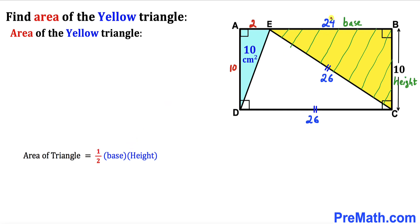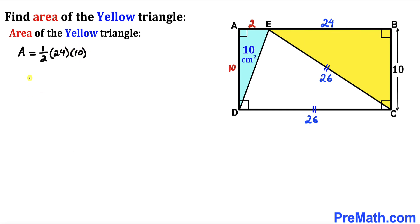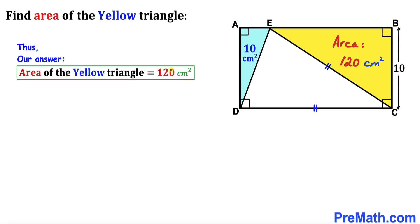So the area A = ½ × 24 × 10, which simplifies to 120 cm². The area of the yellow shaded triangle is 120 cm². That's our final answer. Thanks for watching, and please don't forget to subscribe to my channel for more exciting videos.